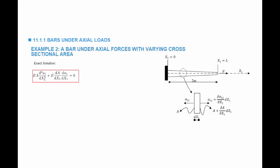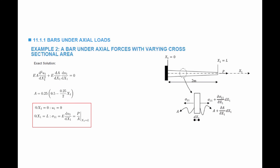We follow what we have done before for beams under axial loading to find the exact solution. The differential equation has a varying area, and the unknown is displacement u1. The area equals the width multiplied by the height, where the height varies as 0.5 minus (0.25/2)·x1. The two boundary conditions are: at x1 equals 0 the horizontal displacement is 0, and at x1 equals L the stress equals E times the strain (du1/dx1), which equals force divided by area at x1 equals L. Plugging this into Mathematica gives the solution.